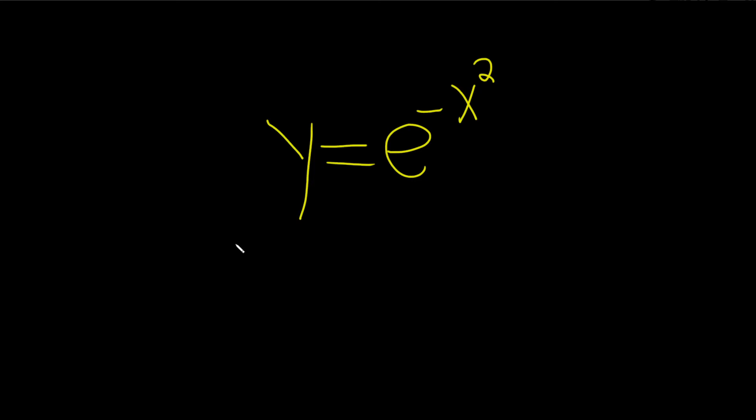In this problem, we're being asked to find the derivative of this function. So the derivative of e to the x is just e to the x, but here it's e to the negative x squared.